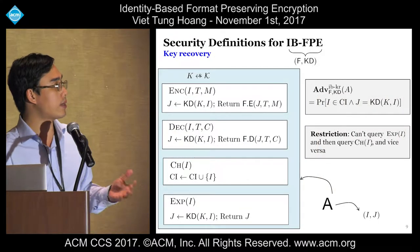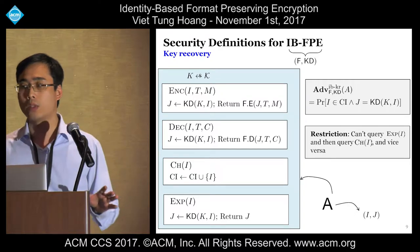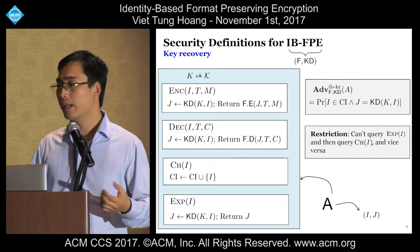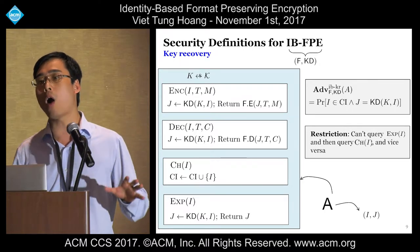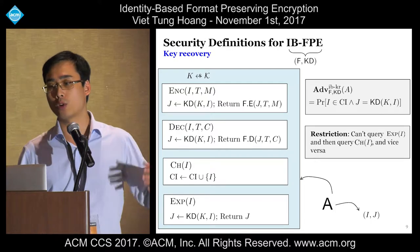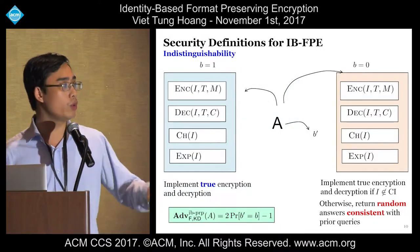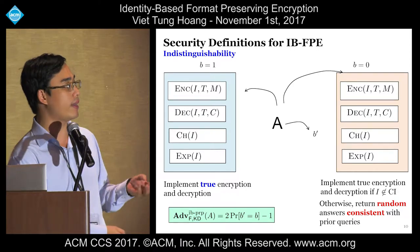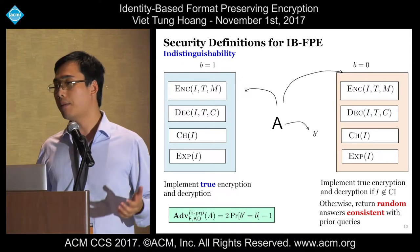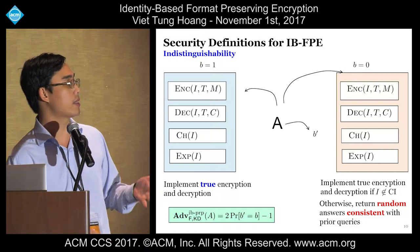We can likewise define an indistinguishability notion. Again, the adversary is placed in either a blue world or a red world. In each world, it is given four oracles. In the blue world, the oracles implement true encryption and decryption. In the red world, they do so only if the query identity is not yet in the challenge list; otherwise, it returns a random but consistent answer. The adversary has to guess which world it is in.